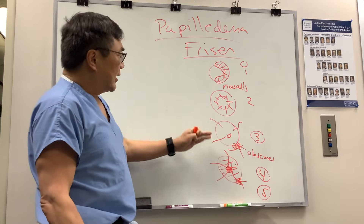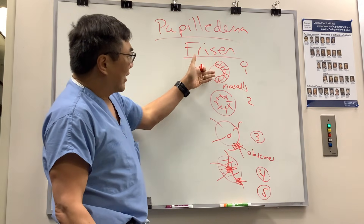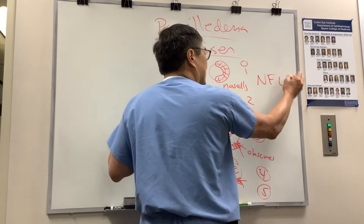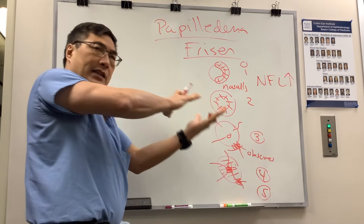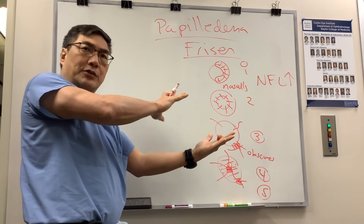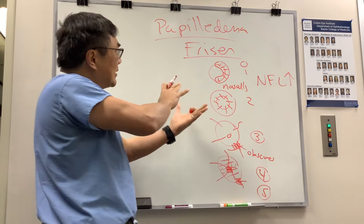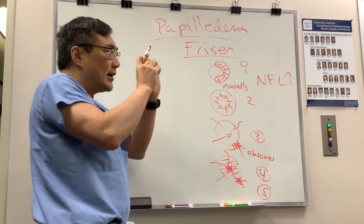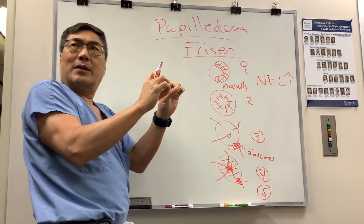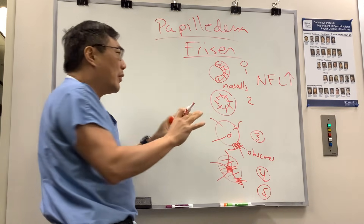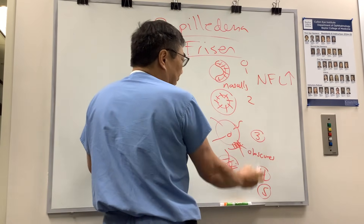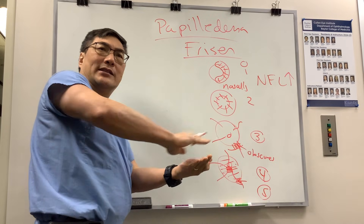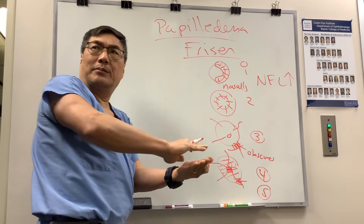That pattern exists because the nerve fiber layer is what is getting the thickening and obscuration. When we see papilledema, it's in the axon, which is in the nerve fiber layer. So when we see blurring of the margin, it's because you're blocking the underlying tissue and the underlying blood vessel.